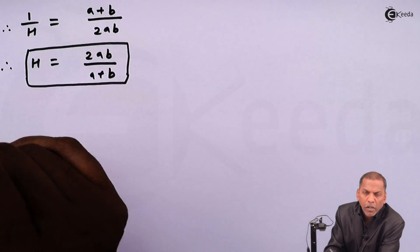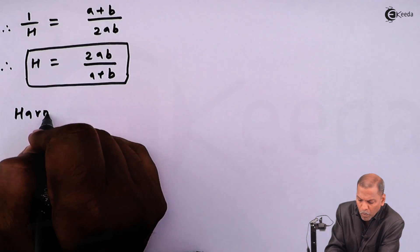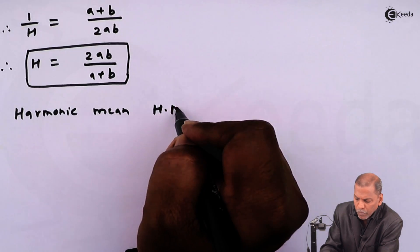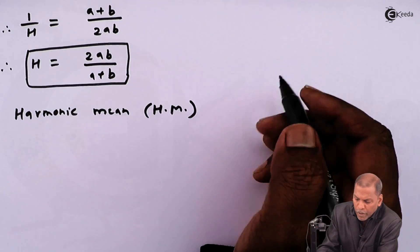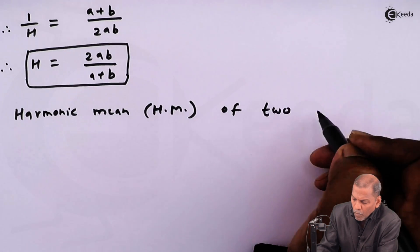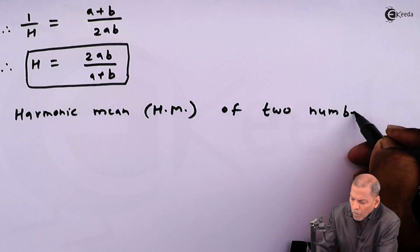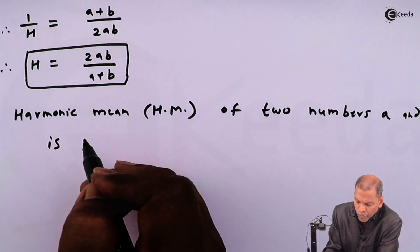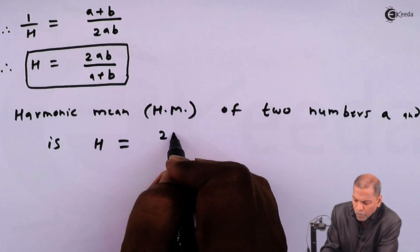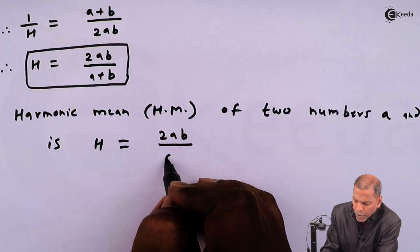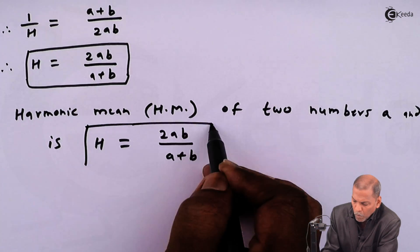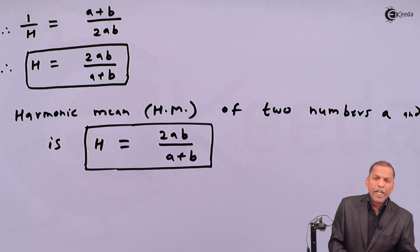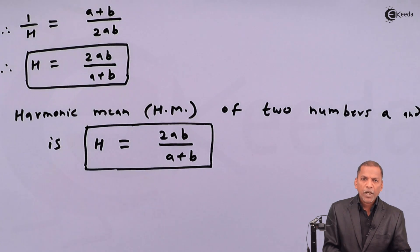So in this way, the harmonic mean, in short HM, of two numbers a and b is H = 2ab / (a + b). This is the required definition of the term harmonic mean. Thank you.